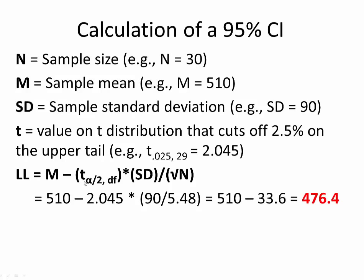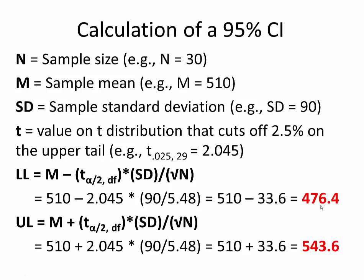The t-value uses alpha divided by 2, referring to a two-tail test that cuts off 2.5% on each tail. Alpha 0.05 is the standard level. The degrees of freedom associated with the estimate of the standard deviation — with a sample of 30 — would be 29. We take the standard error of the mean and multiply it by t to get the likely error. In our case, the likely error is 33.6, giving a lower bound of 476.4. The upper bound adds 33.6 to 510, giving 543.6.